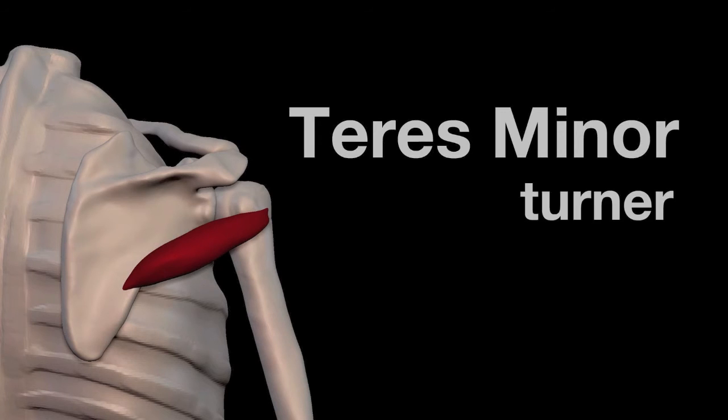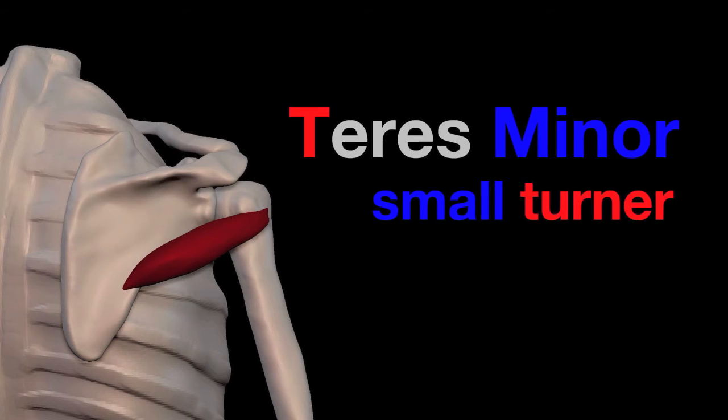I remember it as a turning muscle. It turns the arm, so I can take the T from teres, and that helps me remember turner. And then minor means small, so it's the small turning muscle of the arm.